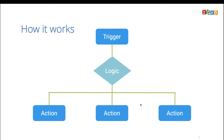Zoho Flow works on the basic idea of trigger and action. A trigger is an event that starts the workflow, and an action is the task that follows automatically. For example, you can create a workflow in which when a new lead is added in your CRM account, a ticket is created in your Desk app automatically. Creating a new lead in CRM is the trigger, and the ticket creation in Desk is the action. So let's get into the demo.